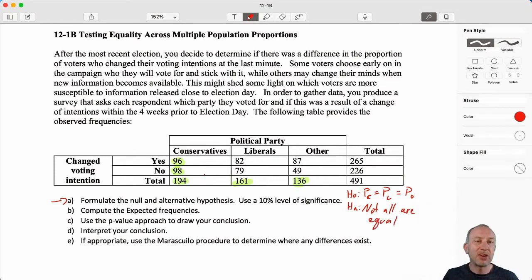So to say not all of them are equal implies at least one of them is different. And we're going to do this test at the 0.1 or the 10% level of significance as given here. So there's our null and alternative hypotheses. Now, when we do this test, we assume that the null is true, as we've done with every other test.